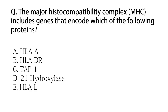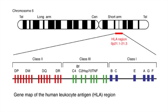Now let's look at some questions. The major histocompatibility complex includes genes that encode which of the following proteins? To figure out the answer, we require knowledge of the genes which encode MHC. First, we need to remember that in humans the MHC region occurs on chromosome number six.